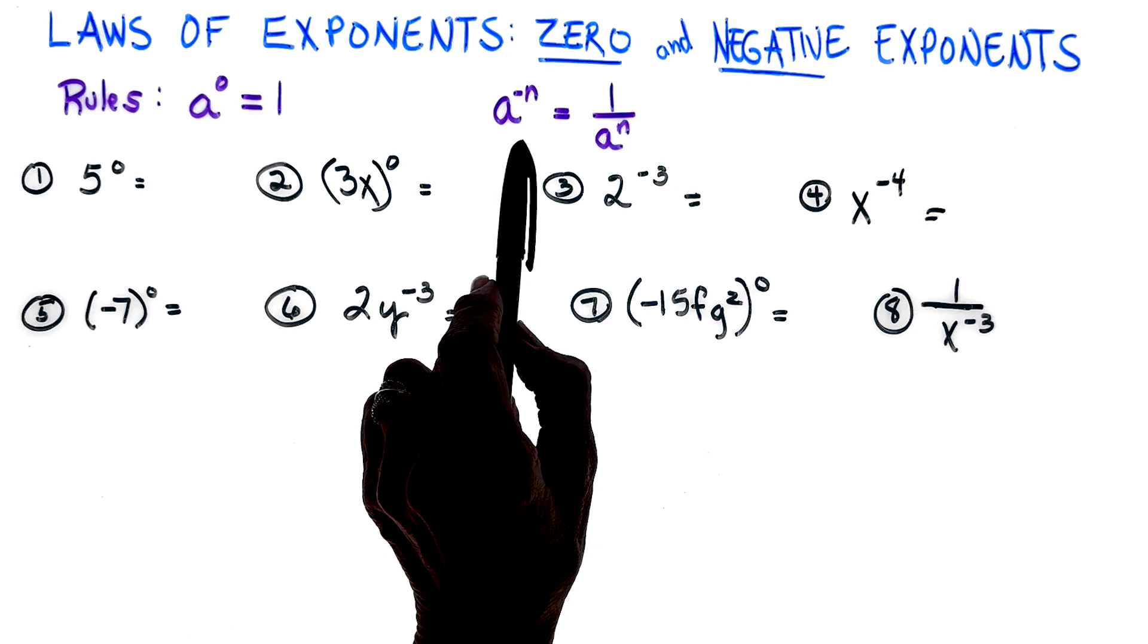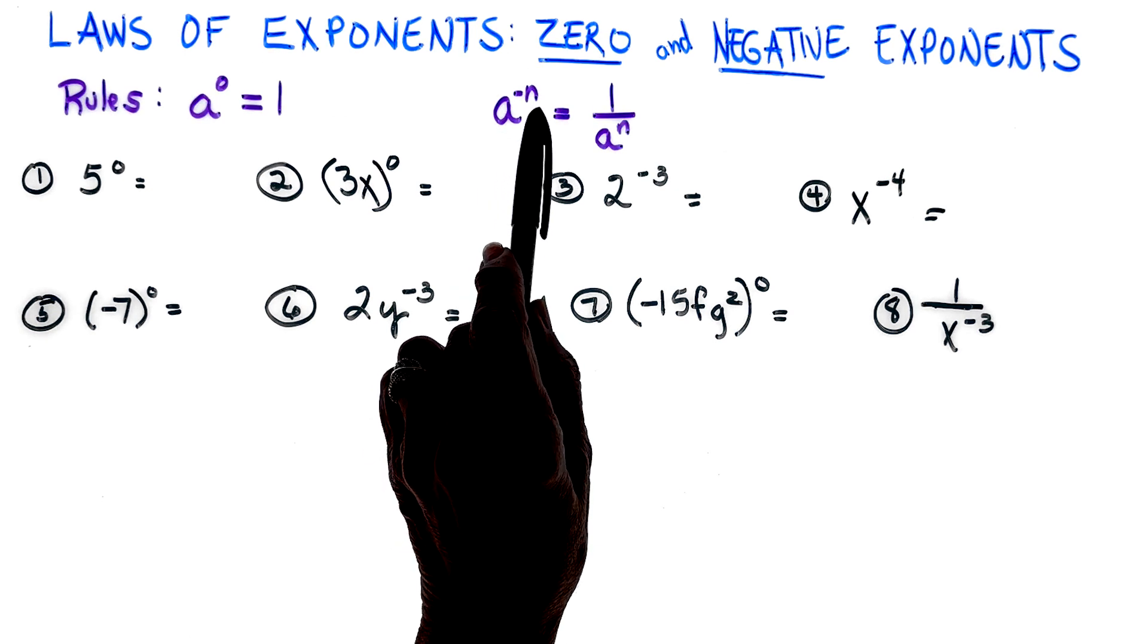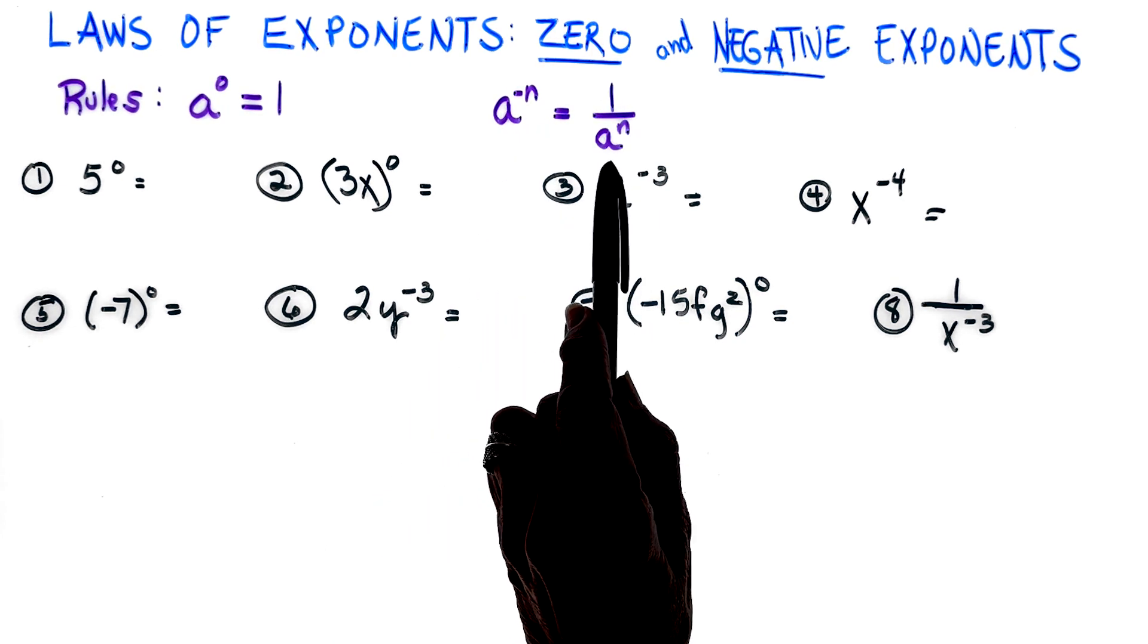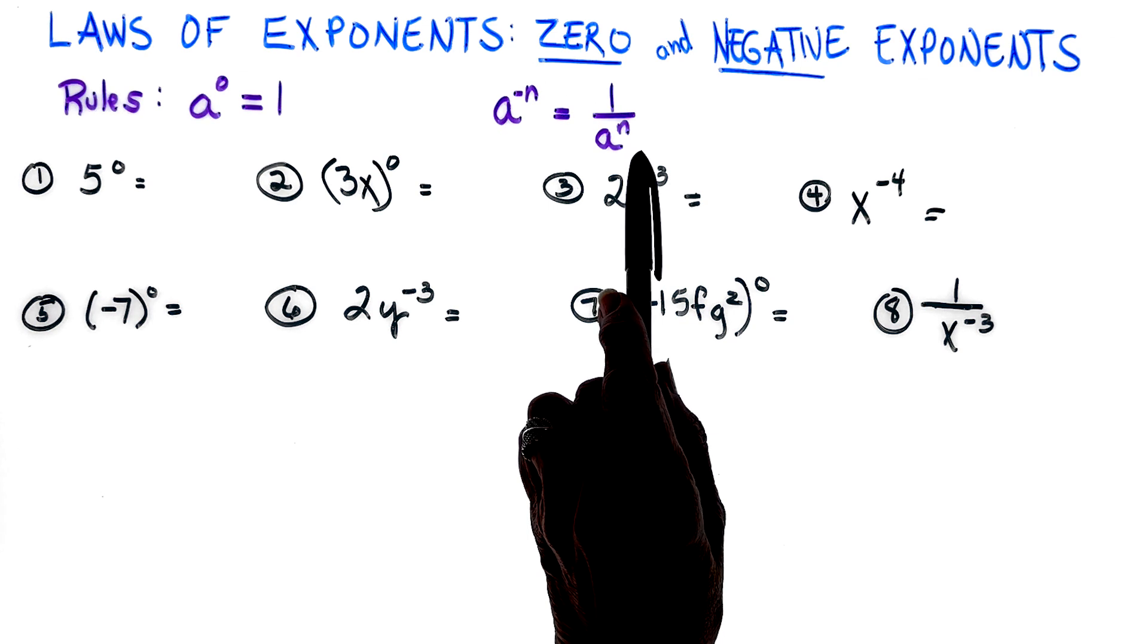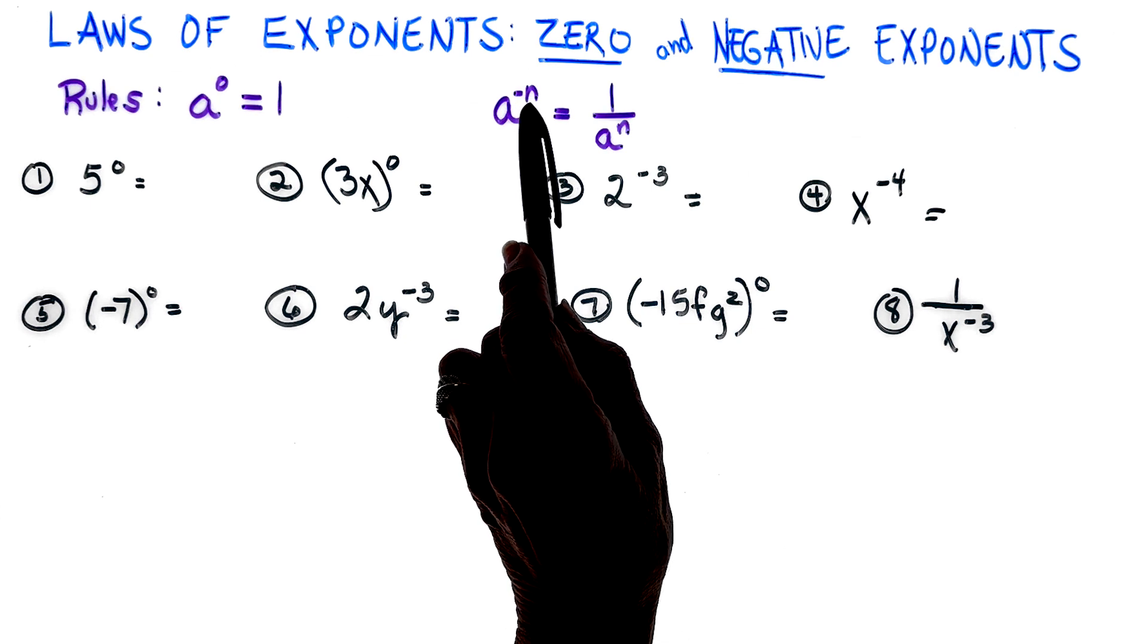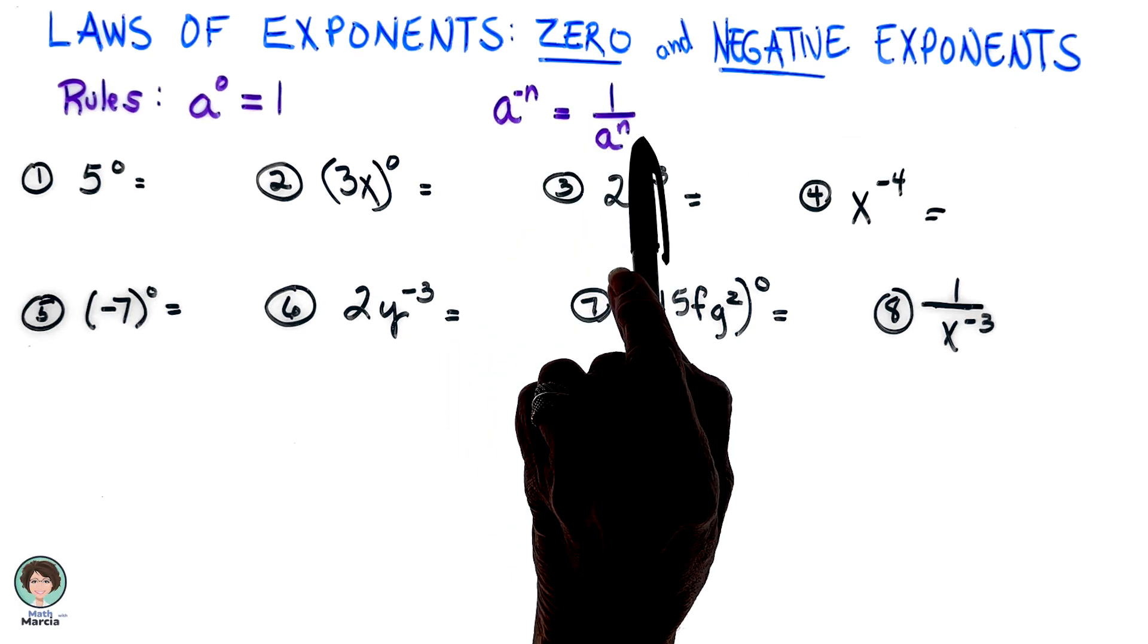The second rule: when we have a to the negative n, notice the negative exponent. All you have to do is put a one as your numerator and write it as a fraction where a to the n is in your denominator. Notice the negative exponent turns positive.